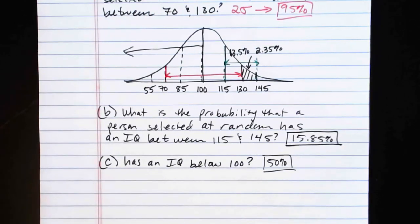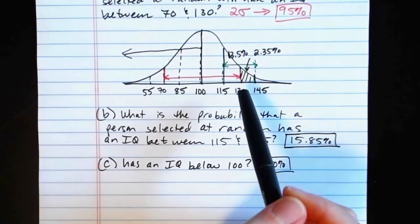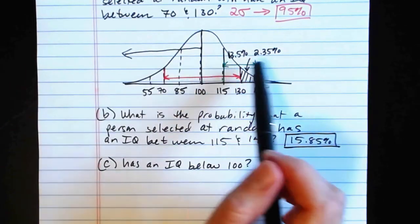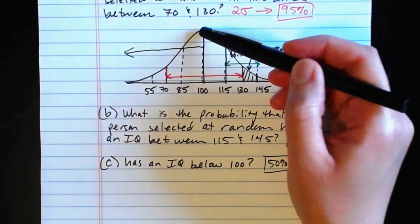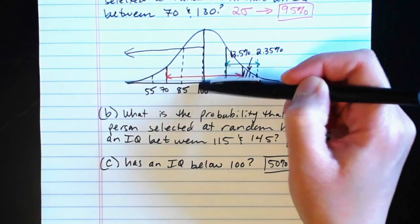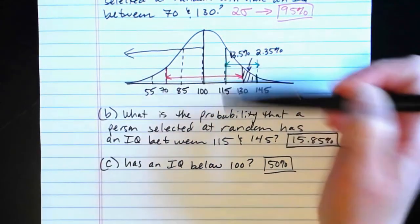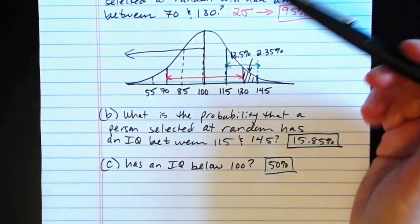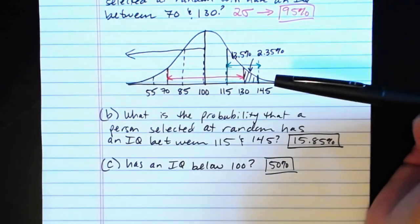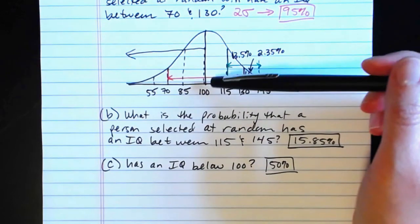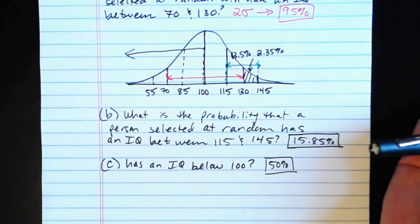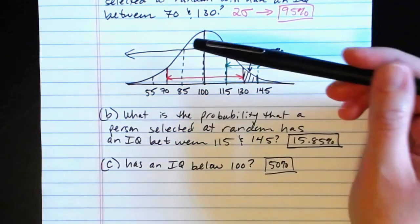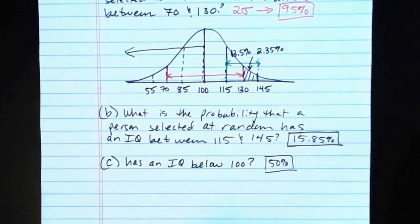What we'll be looking at in some of the next videos is how to find these percentages if the values of interest don't fall on nice whole numbers of standard deviations. For example, what percentage of individuals have IQs between 108 and 125? How would we find that, since they don't fall on these nice boundary values? That's what we'll look at next.